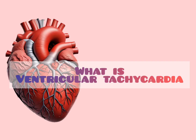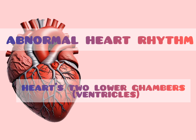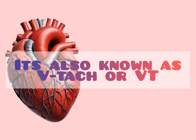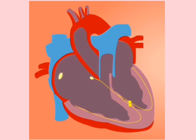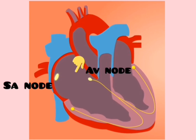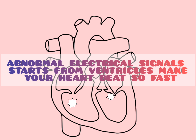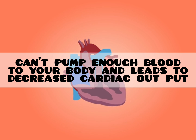Ventricular tachycardia is an abnormal heart rhythm that starts in your heart's two lower chambers called ventricles, also known as V-TAC or V-T. Normally, an electrical signal starts from the SA node in the atrium and travels to the AV node, which serves as an electrical gateway to the ventricles. But in this condition, an abnormal electrical signal starts from the ventricles, making your heart beat so fast that it cannot pump enough blood to your body, leading to decreased cardiac output.